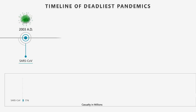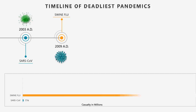At number 4: The Swine Flu of 2009. It was an influenza pandemic that lasted from January 2009 to August 2010, and was the second of two pandemics involving the H1N1 influenza virus. About 150,000 to 575,000 fatalities were recorded.